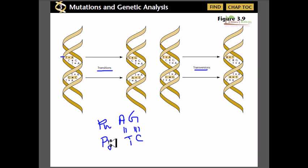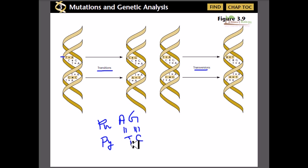If a purine is replaced by a purine and a pyrimidine is replaced by a pyrimidine, then it is called a transition type of point mutation. If a purine is replaced by a pyrimidine and a pyrimidine is replaced by a purine, then it is called a transversion mutation.